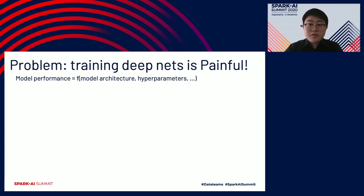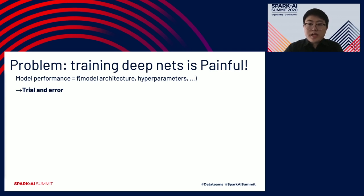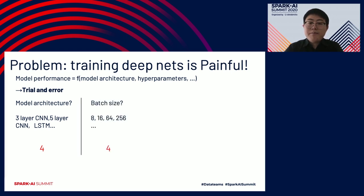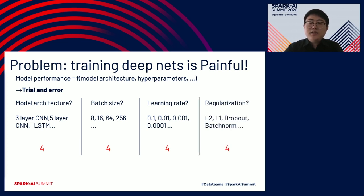You often need to run model selection and hyperparameter tuning on a trial and error basis. For each model config, you will need to train one model, and then you can pick the best model. The number of models you need to train quickly explodes because you have so many choices. In this example, we have model architectures, batch size, learning rates, and regularizations. Although we have only four choices each, we still end up with over 200 models to train.